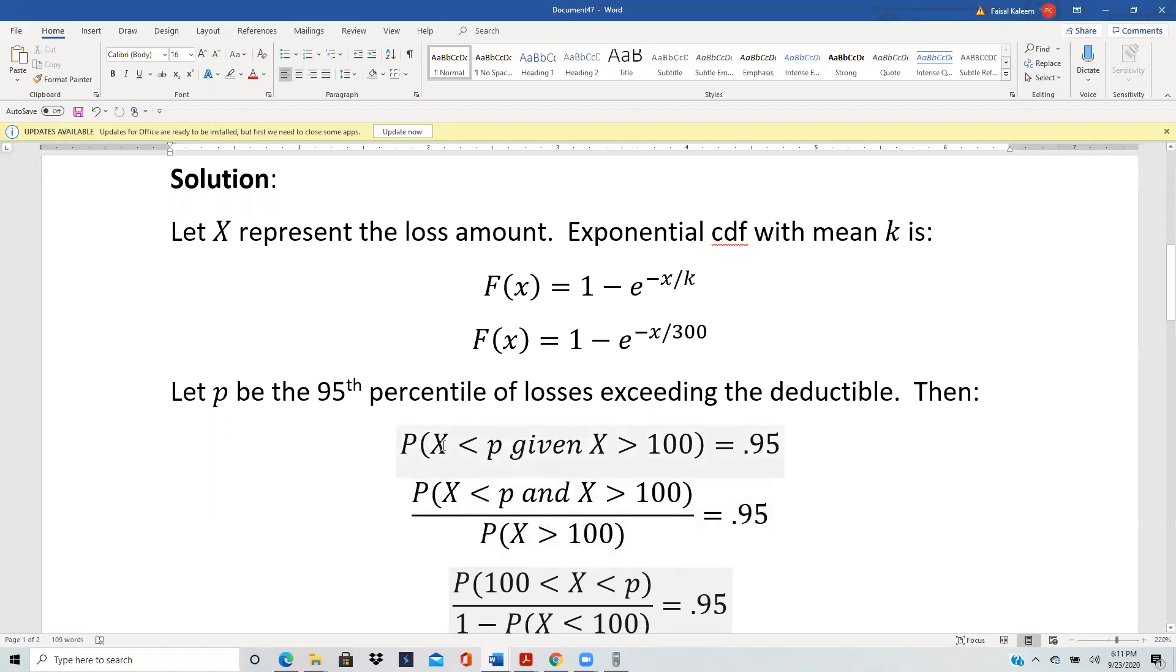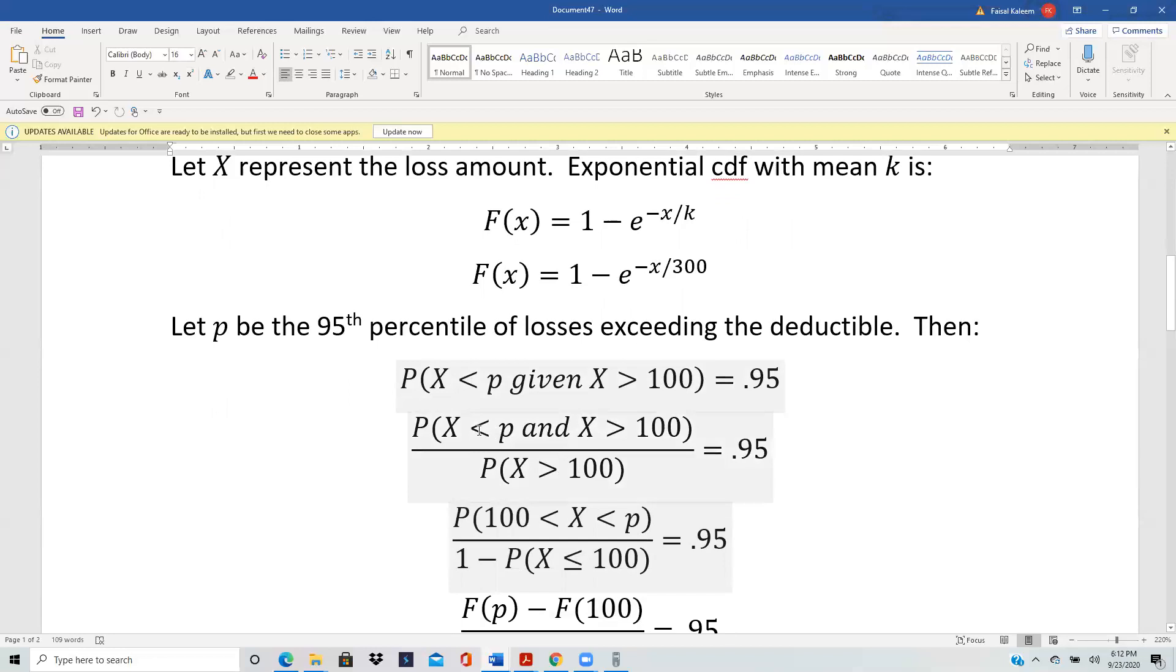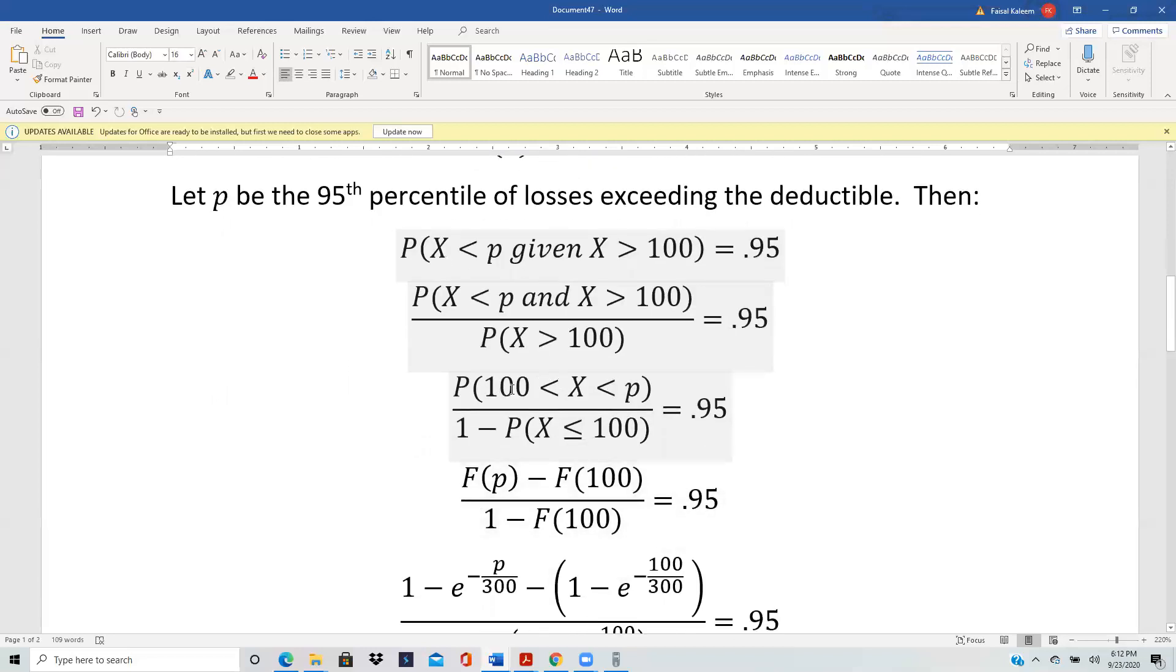And this one, we use the basic given formula: A given B equals A and B. So X less than P and X bigger than 100 divided by probability B, which is X bigger than 100. And when you combine these two, X less than P and X bigger than 100, that combined into X bigger than 100 and less than P.